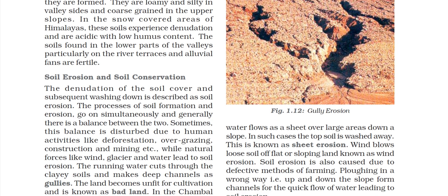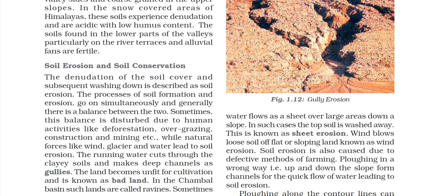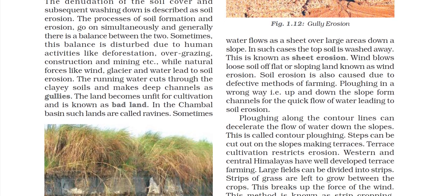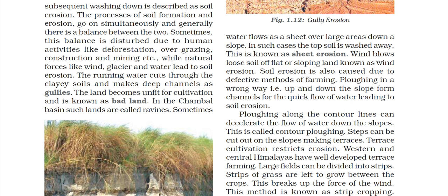Wind blows the loose soil of flat or sloping land, which is known as wind erosion. The whole layer of soil can be eroded very fast this way. Soil erosion is also caused due to defective methods of farming. Ploughing in the wrong way — that is, up and down the slope — creates channels for a quick flow of water, leading to soil erosion.